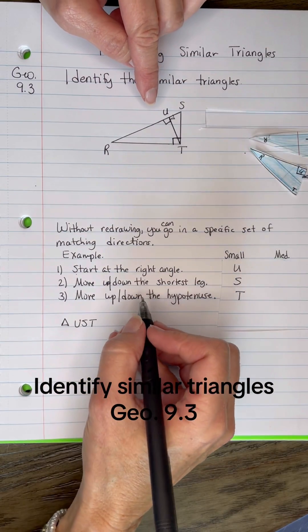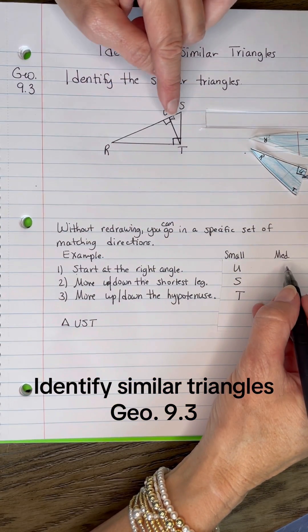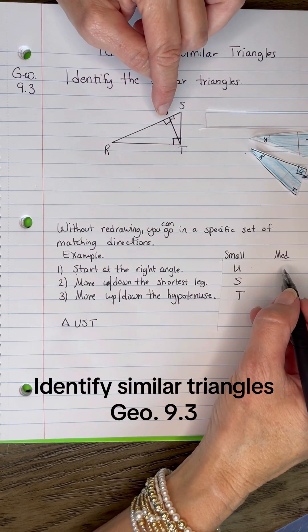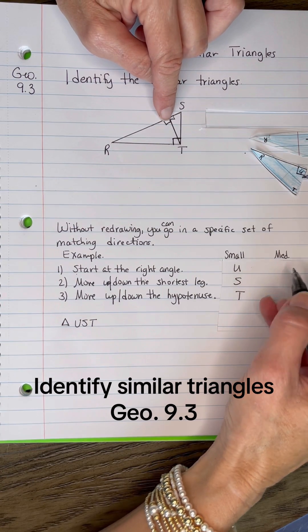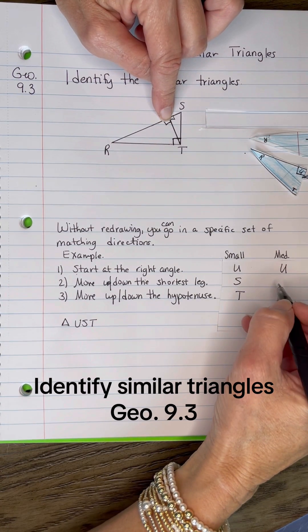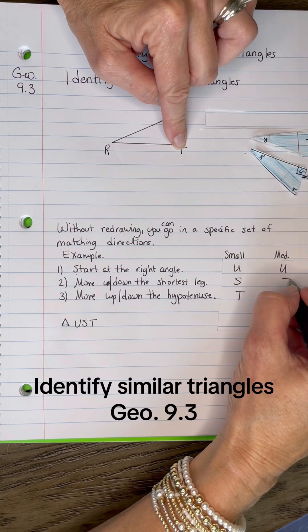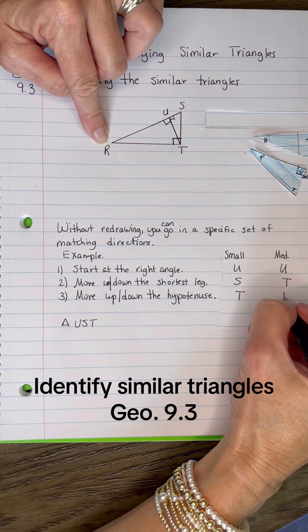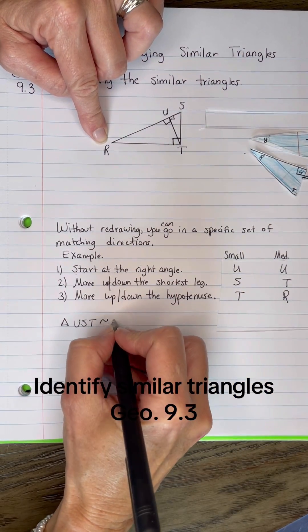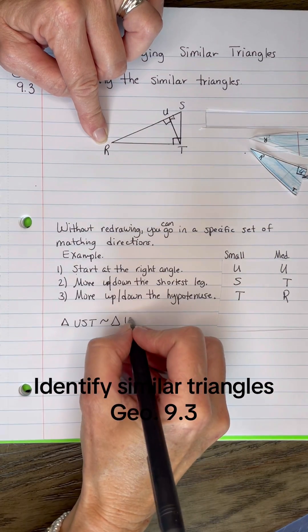And then for the medium size one, that would be U. And then to go up the short leg, it would go to T. And then down the hypotenuse would be R. So it would be similar to triangle in that order, UTR.